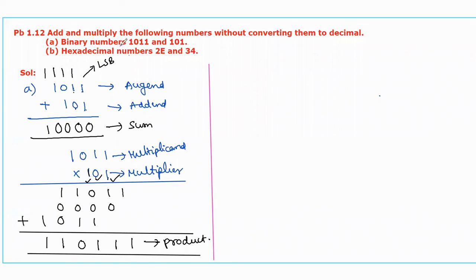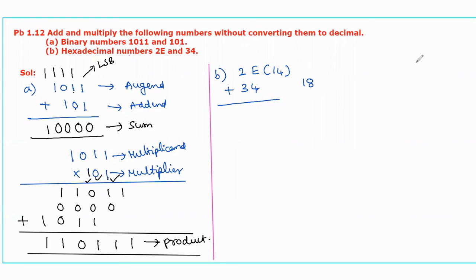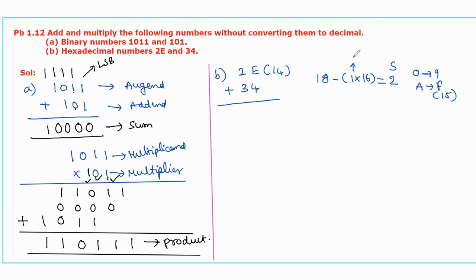Now let us move to the second part: addition and multiplication of hexadecimal numbers. Starting with the addition: 2E plus 34. We add E with 4, which means 14 plus 4 equals 18. This is not a hexadecimal digit, since hexadecimal digits are 0 to 9 and A to F, where F equals 15. So we convert 18 to a hexadecimal digit by subtracting the number of 16s in 18. The result is 2, which represents the sum, and the number of 16s represents the carry.